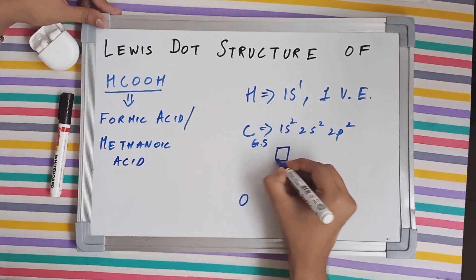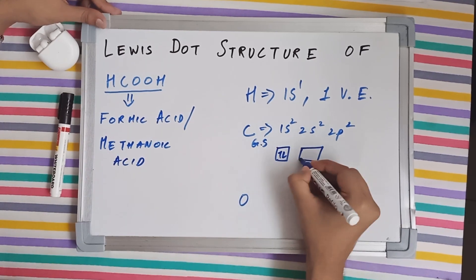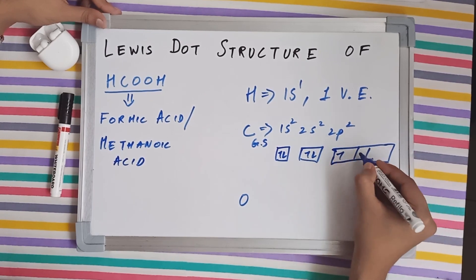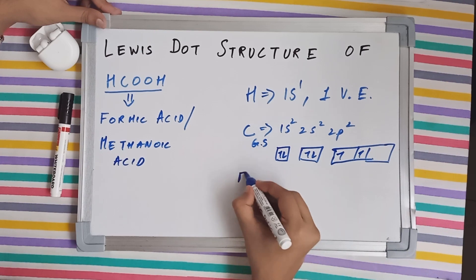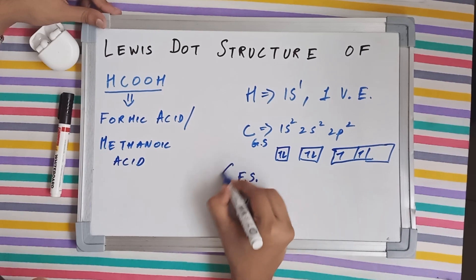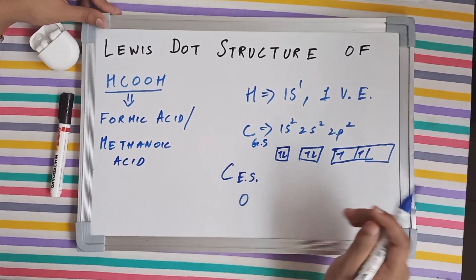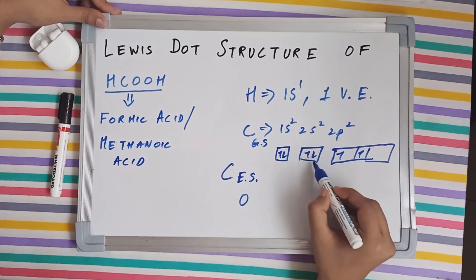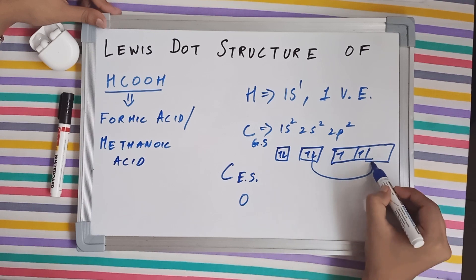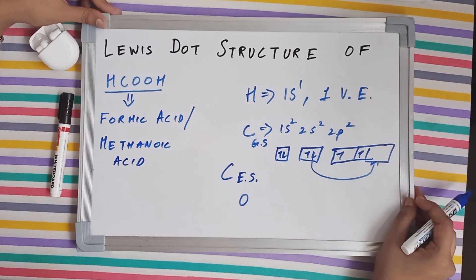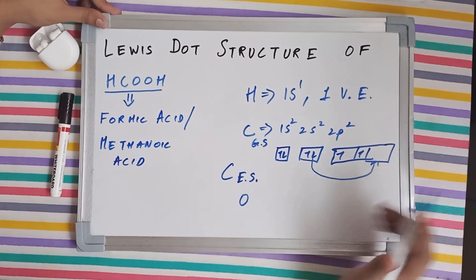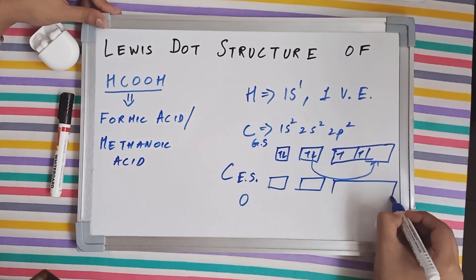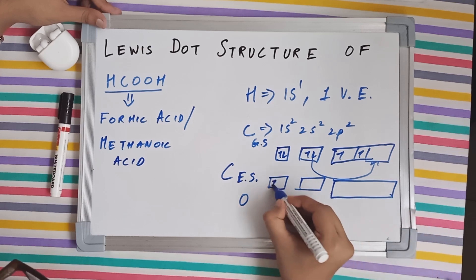Talking about carbon in its ground state, its electronic configuration is 1s2 2s2 2p2. The orbital diagram shows 1s, 2s, and three orbitals for the 2p subshell with two electrons. In its excited state, one of the electrons from the 2s subshell jumps and sits in one of the orbitals in the 2p subshell.